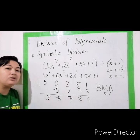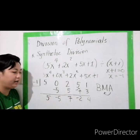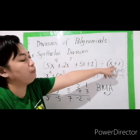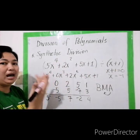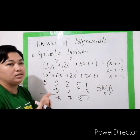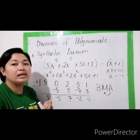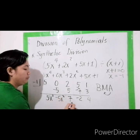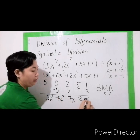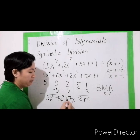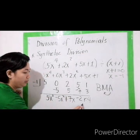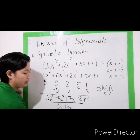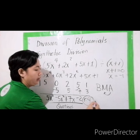These are all the coefficients. Now we assign the variables. The highest exponent in the dividend is 4 and in the divisor is 1, so 4 minus 1 is 3. Our quotient starts at x raised to 3, then x raised to 2, then x, then constant. The last value, 4, is your remainder. This is already your quotient, and this is your remainder.